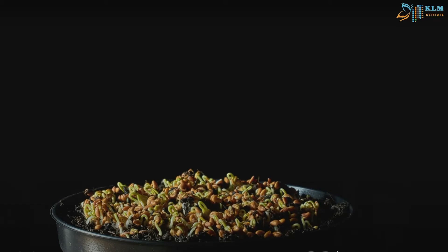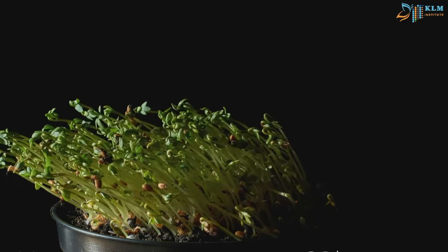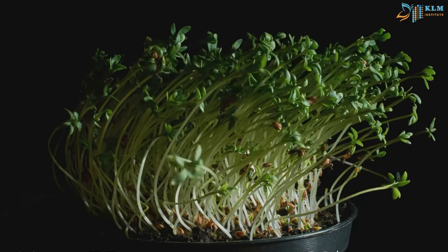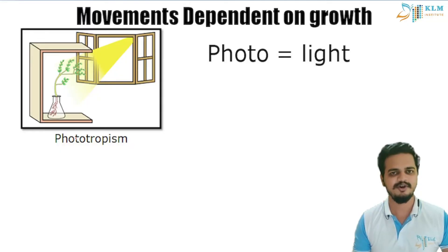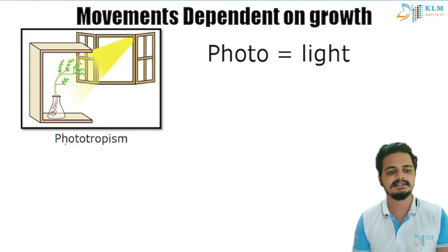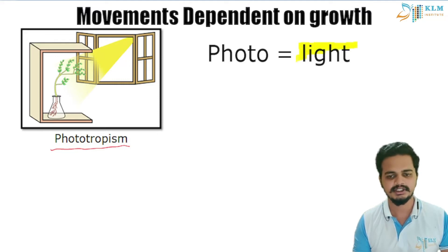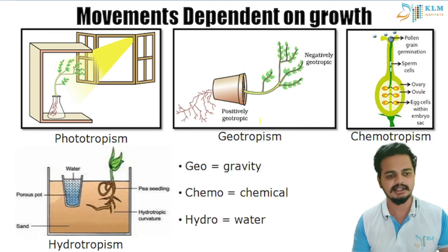You can see in the video that leaves are shifting or growing towards the light. This process is known as phototropism. Photo means light, and tropism means the growth of a plant towards a stimulus. So a plant shoot shows positive phototropism, growing towards light.